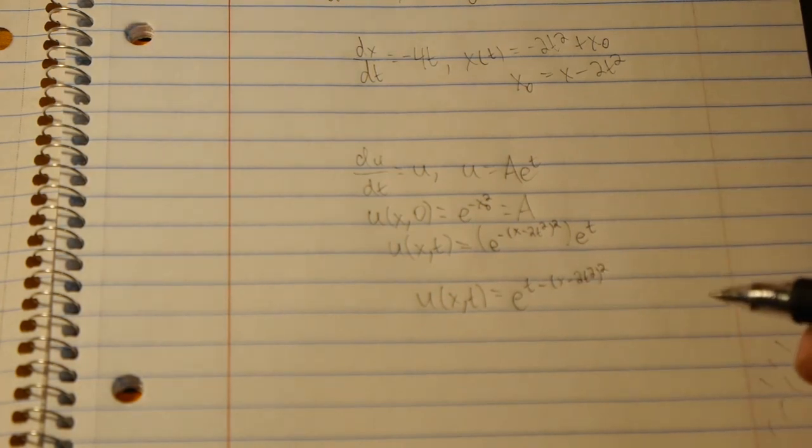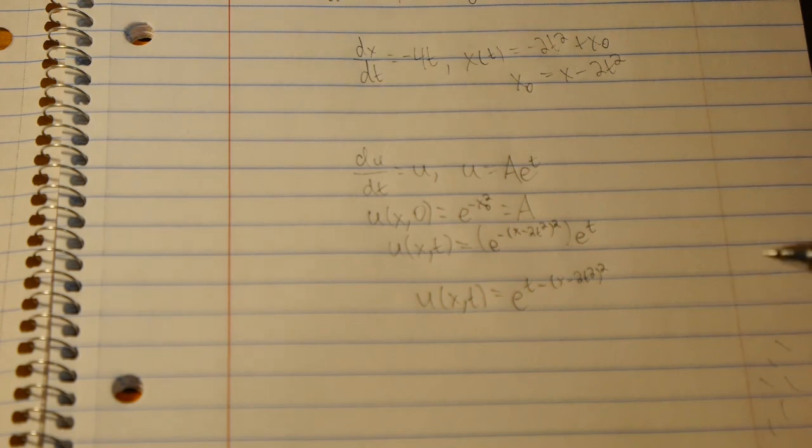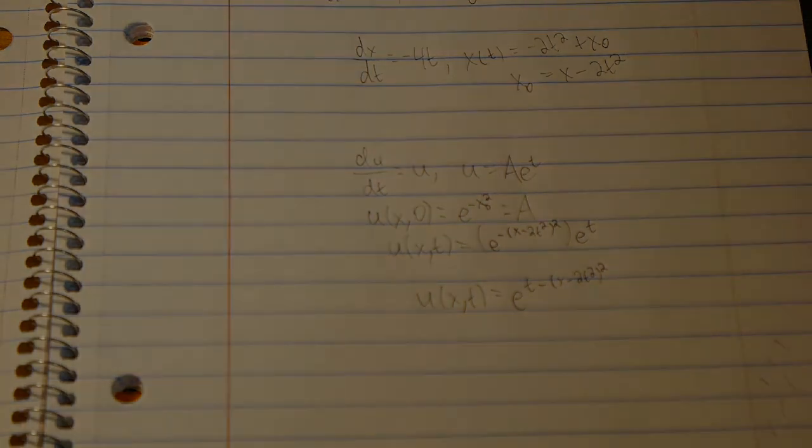And there you go. That's a problem that you've solved using the method of characteristics and you reduce the PDE to an ODE with a simple method to solve any advection plus ODE partial differential equation.